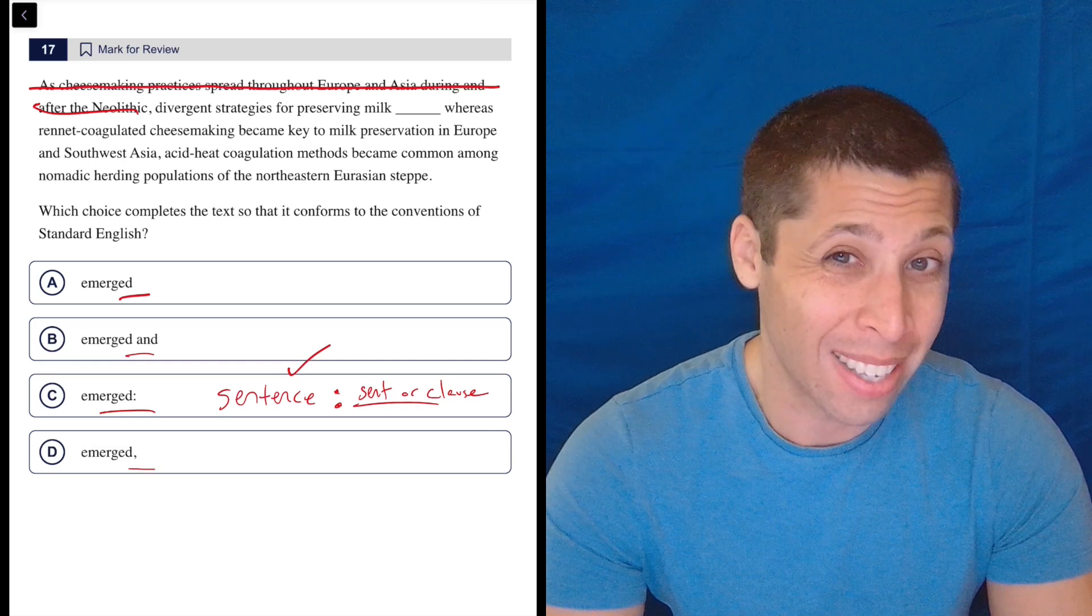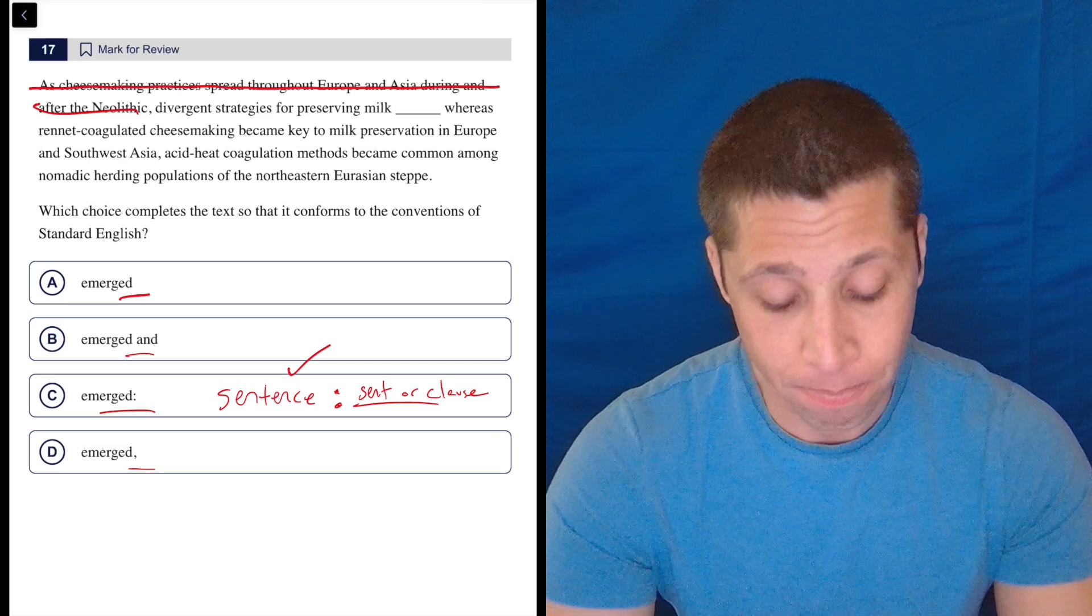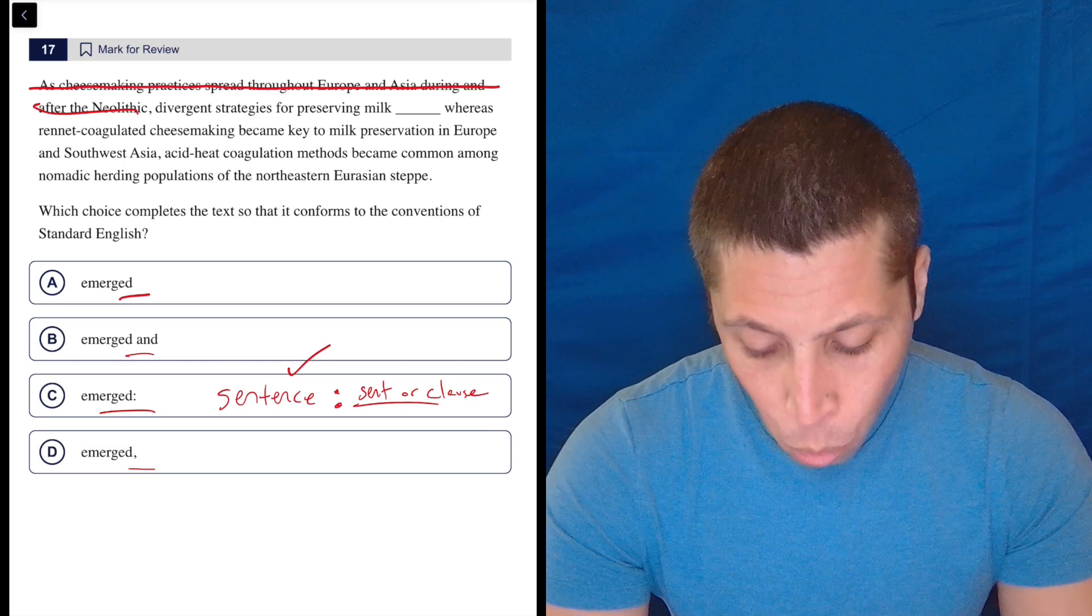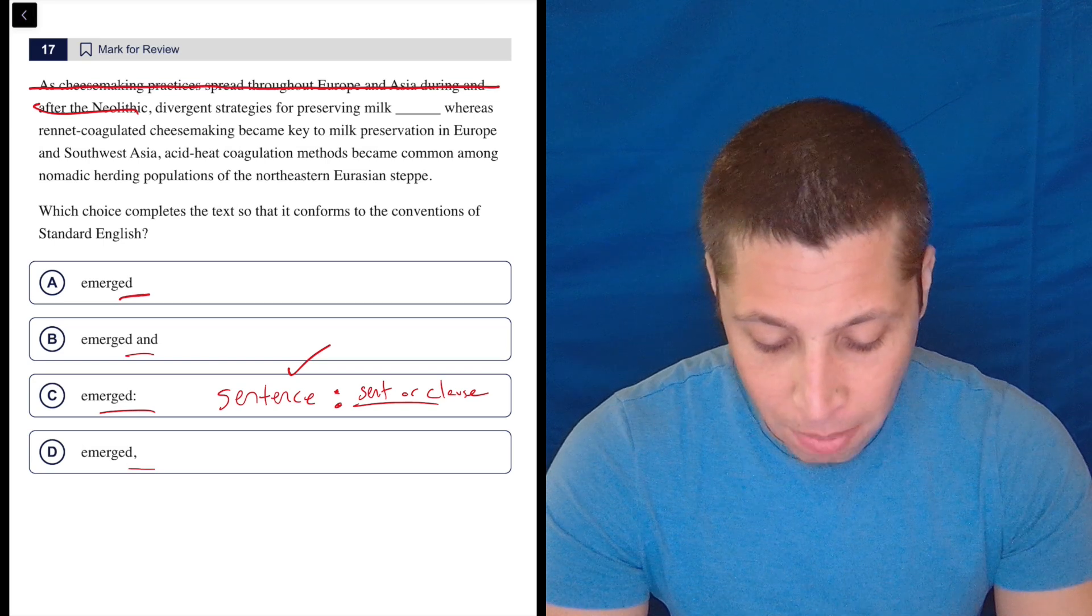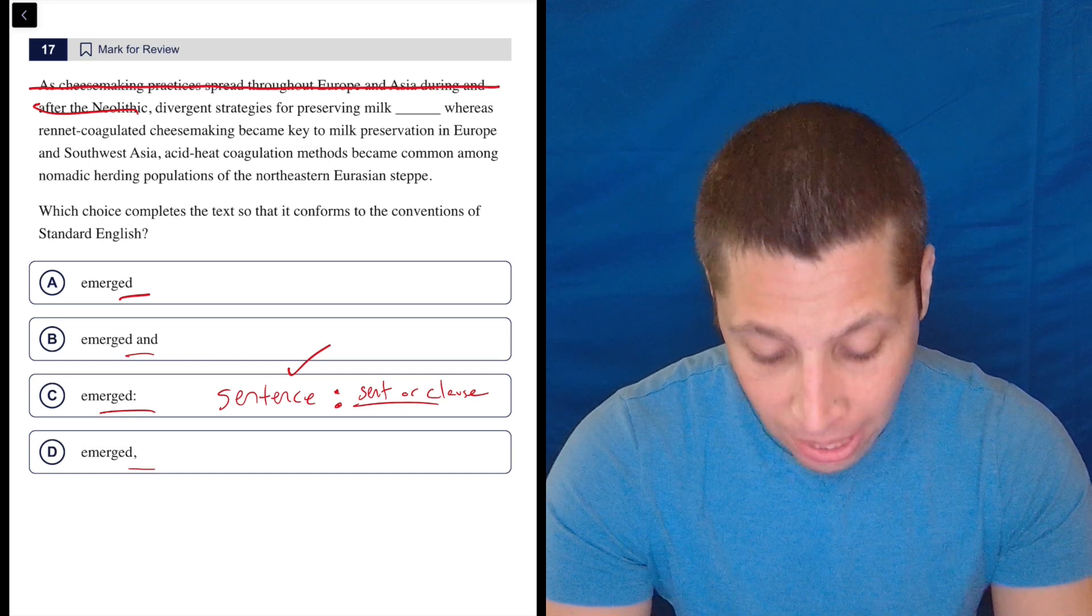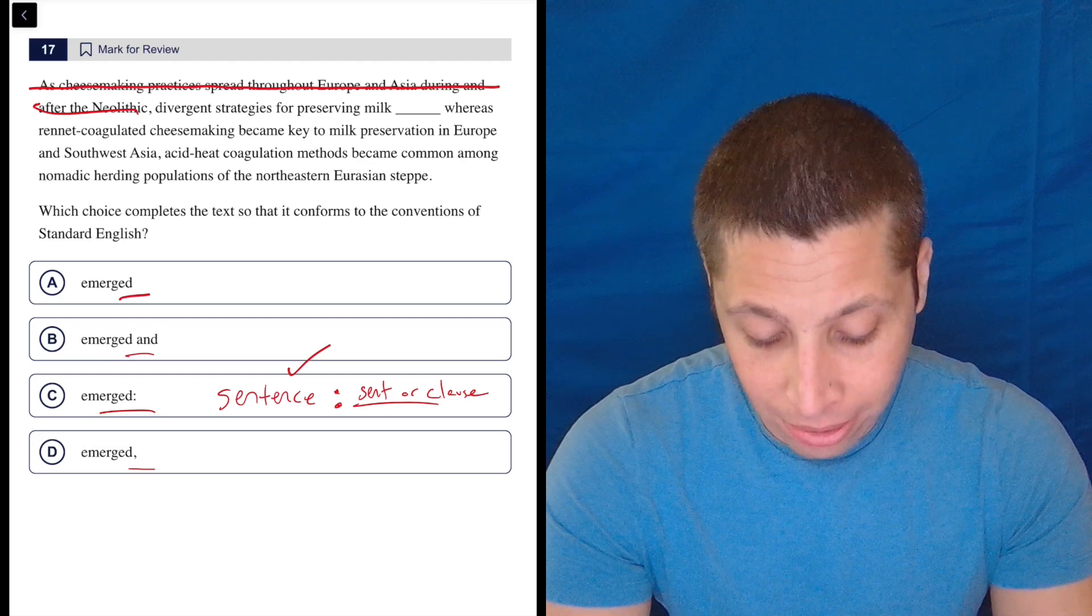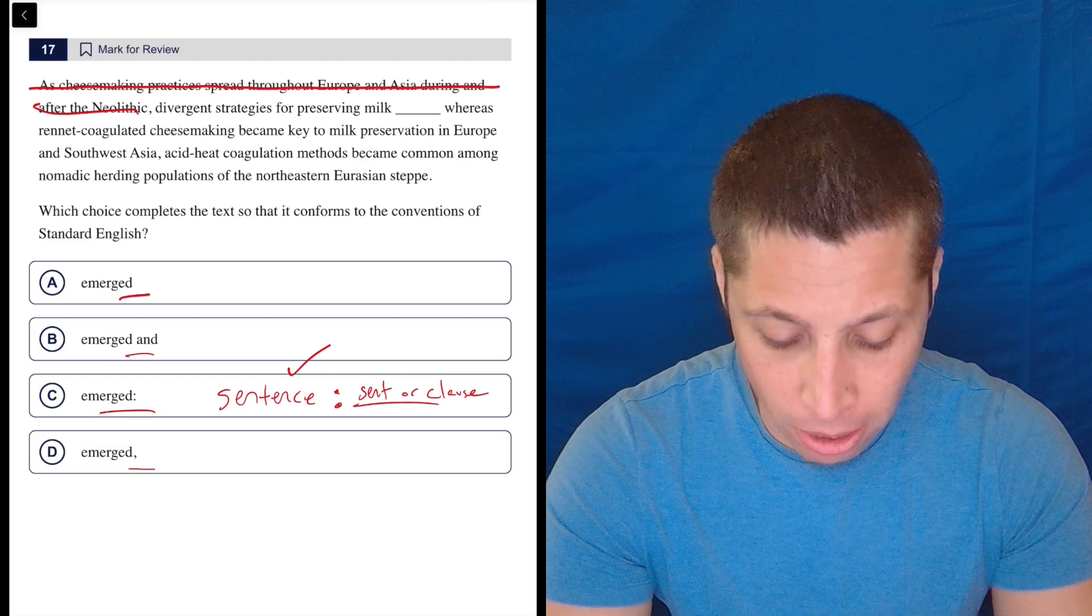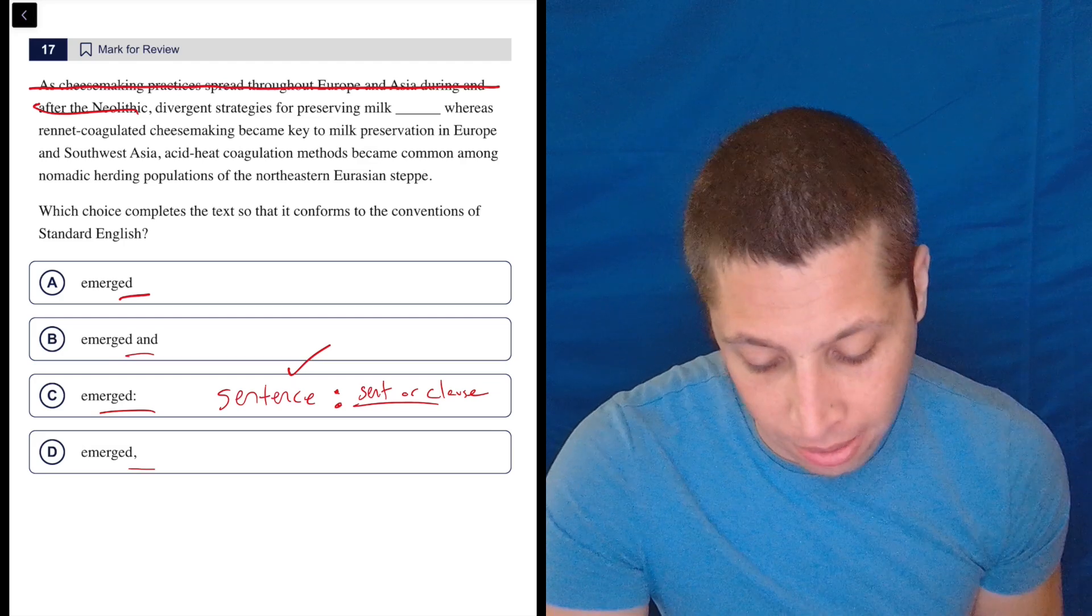So if this is a sentence, I'm kind of stuck and I've got to pick C. So let's see what we got. Whereas rennet coagulated cheesemaking became key to milk preservation in Europe and Southwest Asia, acid heat coagulation methods became common among nomadic herding populations of the northeastern Eurasian steppe. So this is a sentence.